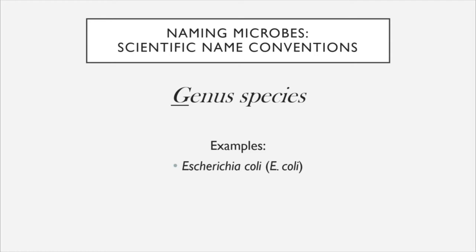First, we have Escherichia coli, which we saw on the scaling chart. Escherichia coli is named after the German bacteriologist Theodor Escherich, and also named after the colon, which is the part of the body where it typically resides. We can find clues in the names of microbes as to where they live, what their function is, or who discovered them. The abbreviated name E. coli uses just the first letter of the genus followed by a period, and the full species name written out.